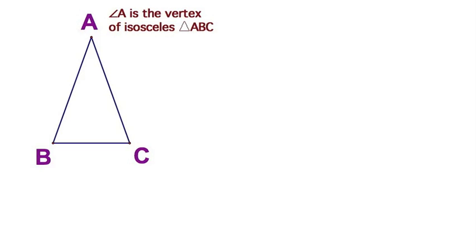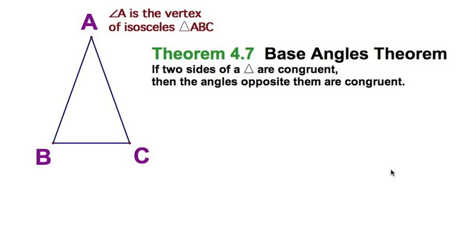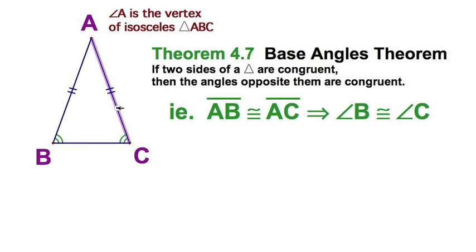Let's start out with this really neat theorem, base angles theorem. If these two sides are congruent, then these two base angles are congruent. As an example, right there, if I've got a proof of these two, I can conclude that angle B is congruent to angle C. Pretty handy.